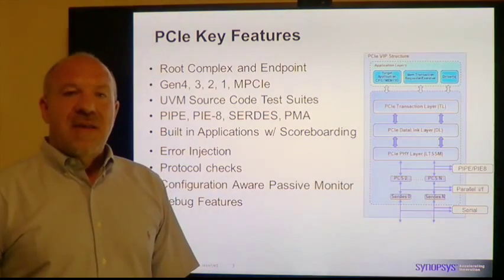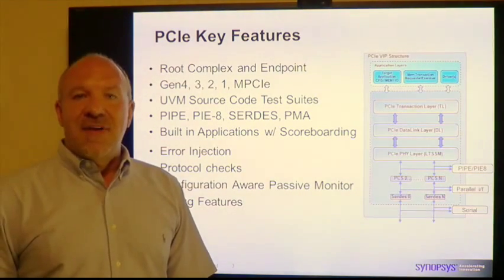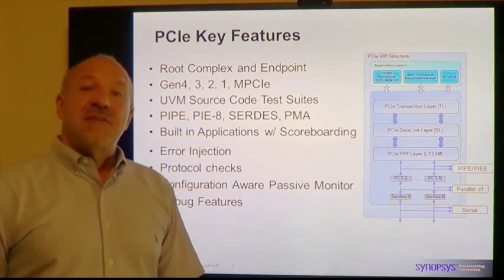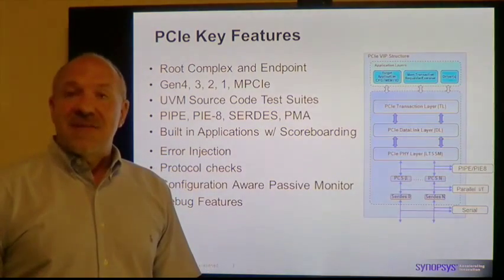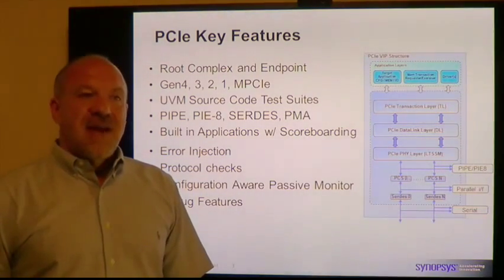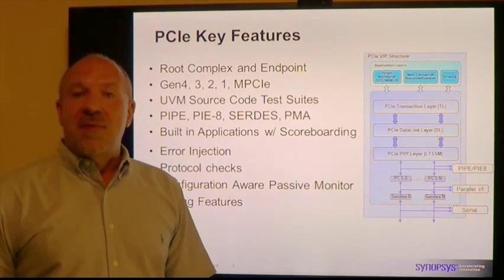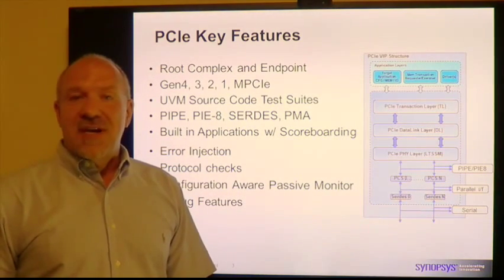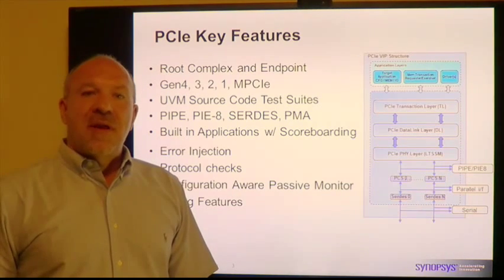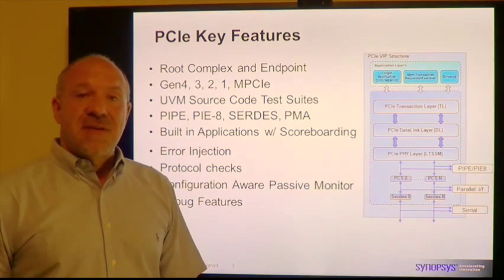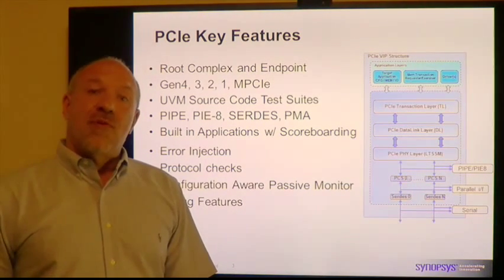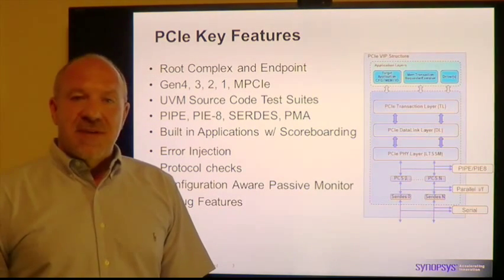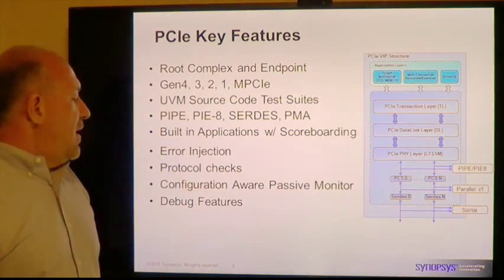Protocol checks are of course built in across all the layers, everything from the TL down to the PL, to give you good confidence in adhering to the spec. The passive monitor is another available feature — we have both an active and passive monitor capability built in. The active is always on, but the passive monitor can be enabled by itself or alongside the actual VIP for additional protocol checks and visibility. One of the key features of the passive monitor is its ability to be configuration aware — you can either backdoor program it, or have it snoop the bus and watch the enumeration sequence and program itself to do the appropriate checking.